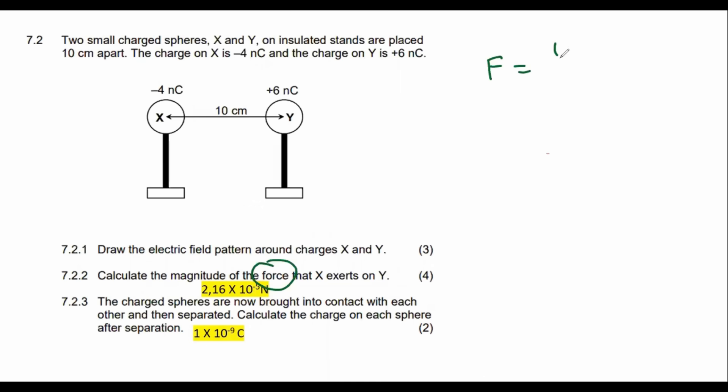So we're just going to say F equals K Q1 Q2 over R squared. Now, remember that K is a constant of nine times 10 to the power of nine. And some learners always ask me, what units must we use in this chapter? Must we use kilometers, centimeters, meters? And I have a very nice suggestion for you guys.